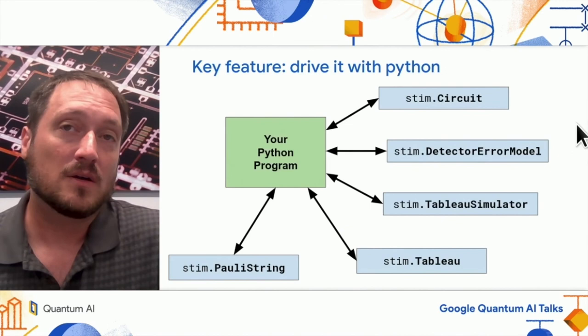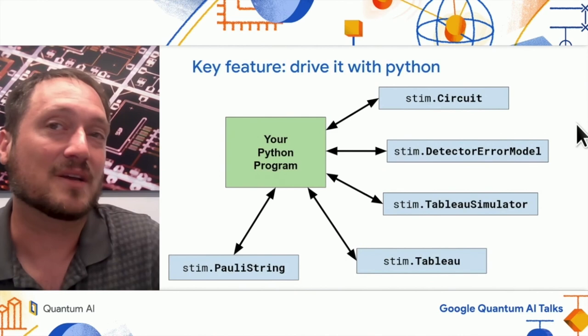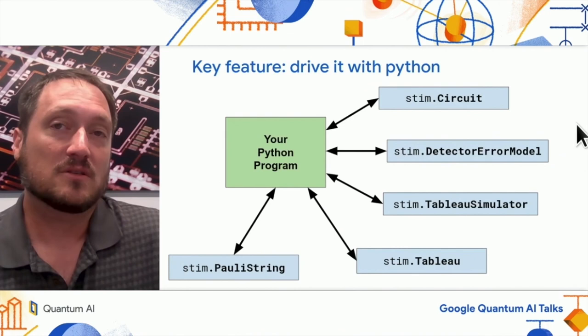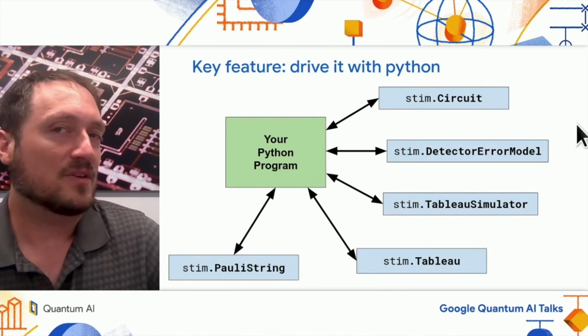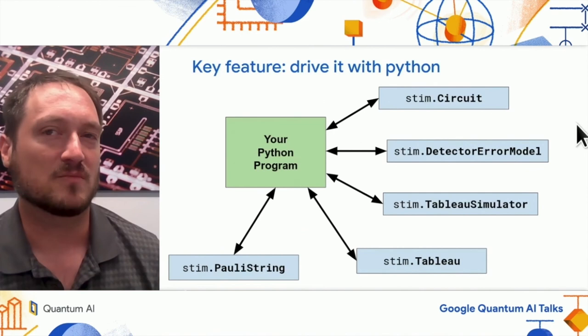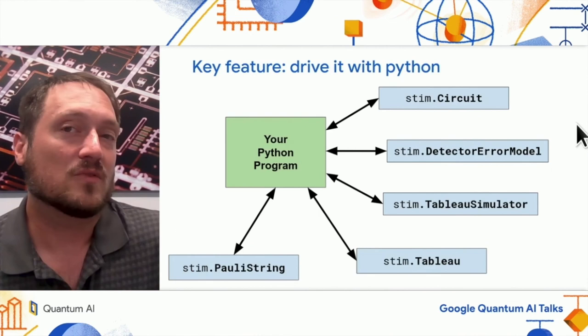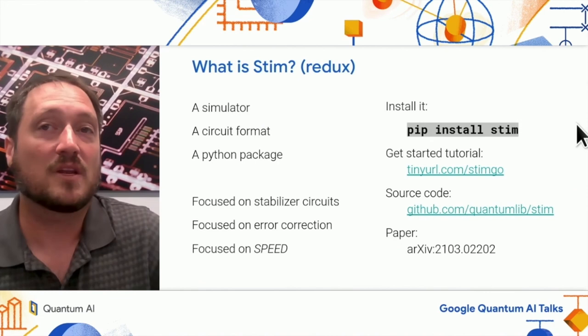The last feature of Stim I wanted to mention is that you don't have to use it in the intended way — making a circuit and pulling samples from it. There's a variety of classes and methods exposed by the library that you can use as building blocks. For example, you can achieve things Stim doesn't directly implement by driving the Tableau simulator in creative ways. Because Stim is a Python library, you can use the power of programming to work it in wacky and wonderful ways I never considered. If any of that sounded compelling, give Stim a try — you can install it into your Python environment using pip and follow the getting started tutorial.